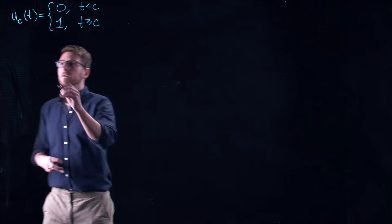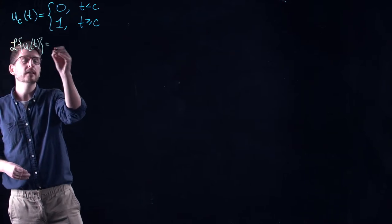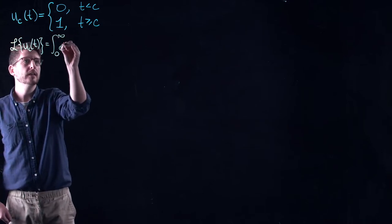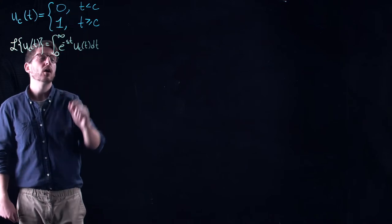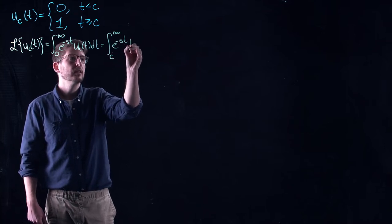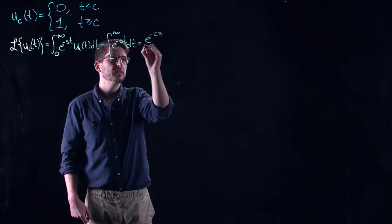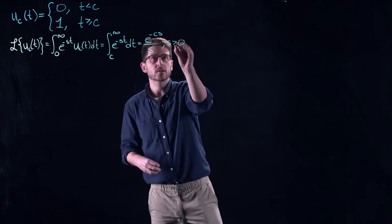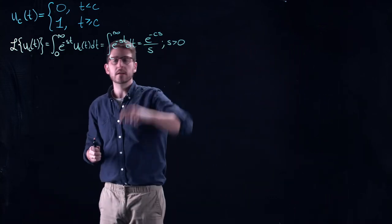Let's investigate what the Laplace transform of this should be. Since we are integrating from 0 to infinity, we have the integral from 0 to infinity of e^{-st} · u_c(t) dt. Since u_c is 0 all the way up to c, this becomes the integral from c to infinity of e^{-st} dt, which evaluates to e^{-cs} over s. If you go back and look at our examples from two lectures ago, we actually did one of these step functions, and we saw this exponential popping out.